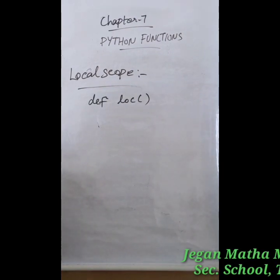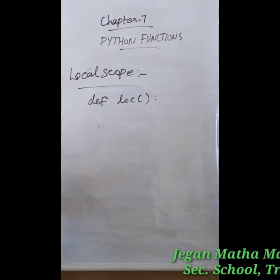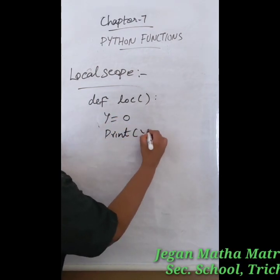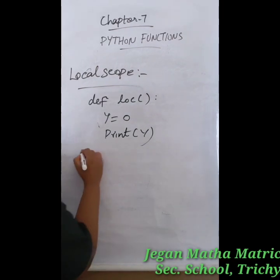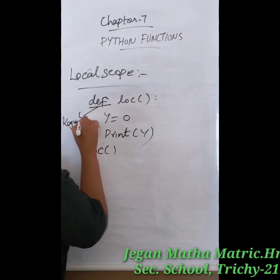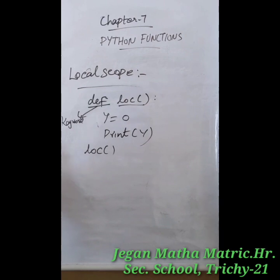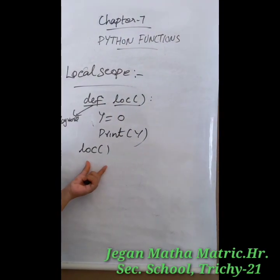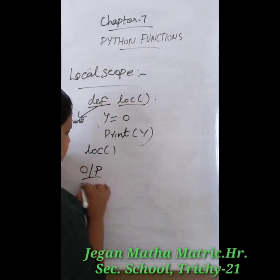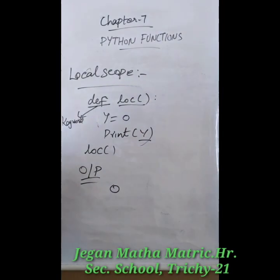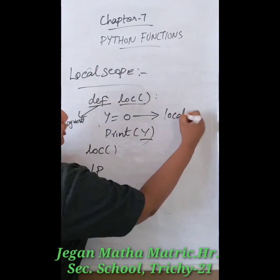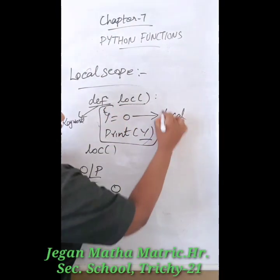Let us see the example for a local variable. We define: `def local():` then `y = 0`, then `print(y)`, and then we call `local()`. We already know that `def` is a keyword and `local` is the function name. When we call the local function, it comes here: y equals zero, and prints the output value — y value is zero.